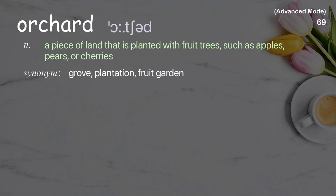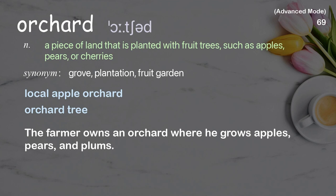Orchard: A piece of land that is planted with fruit trees such as apples, pears, or cherries. Examples: Local apple orchard. Orchard tree. The farmer owns an orchard where he grows apples, pears, and plums.